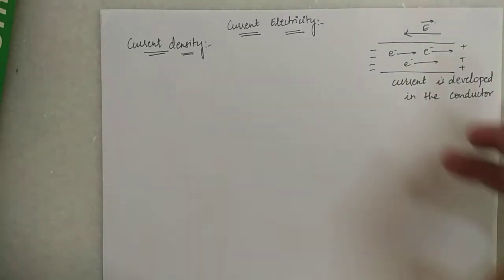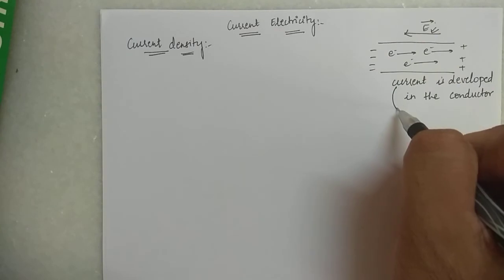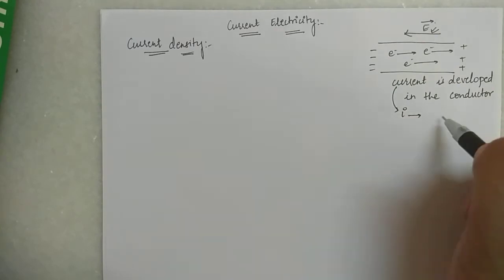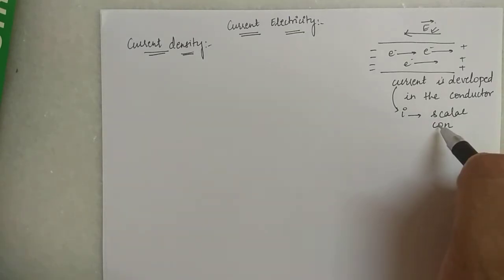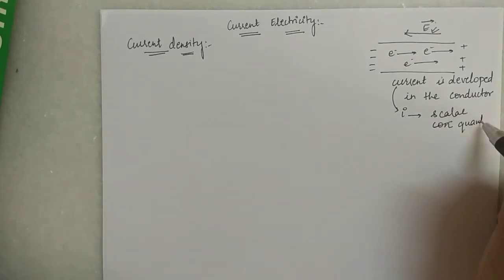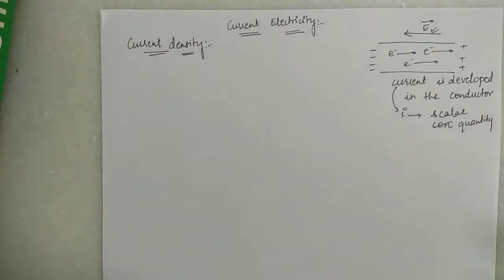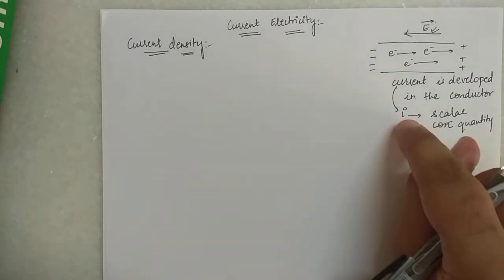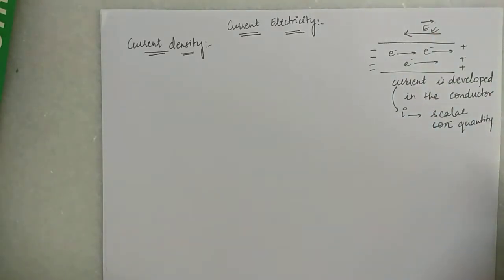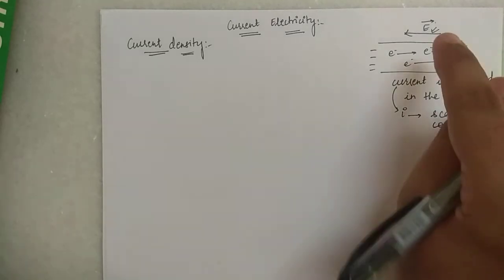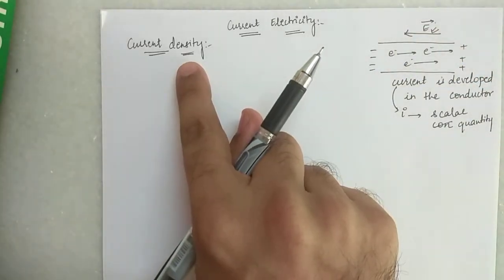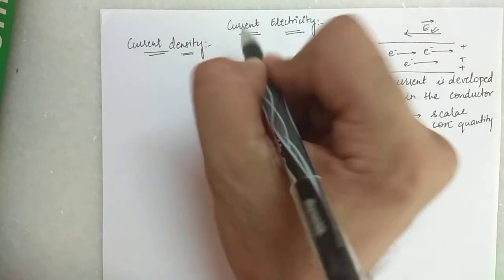Now this electric field is a vector quantity, but your current is a scalar quantity. Even though we say that current always flows from higher potential to lower potential, current is still a scalar quantity — it is not a vector quantity. Because current is a scalar, you cannot directly relate a scalar to a vector, so we define a new vector called current density.